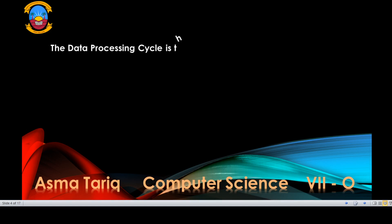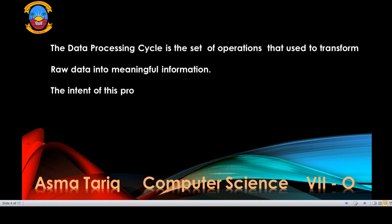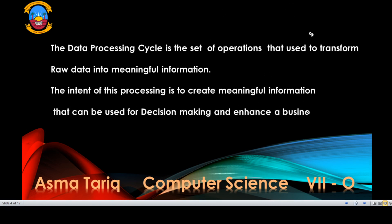The data processing cycle is the set of operations that is used to transform raw data into meaningful information. The intent of this processing is to create meaningful information that can be used for decision making and enhance the business.